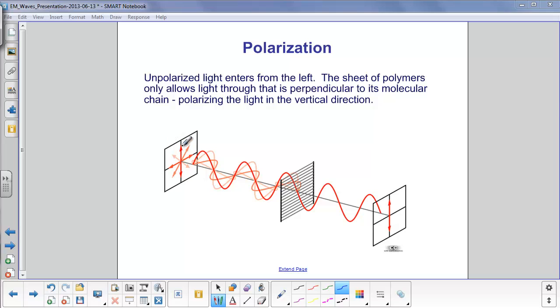You can see how the electric field vectors are pointing in every single direction. So let's just choose one that's going in this path. It hits the polymer. Now since it is vibrating perpendicular to the polymer's organic molecules, it will pass through as if nothing had happened.